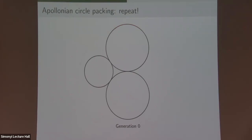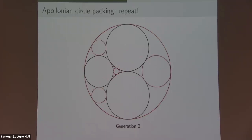This is what makes what we call an Apollonian circle packing. We start with three tangent circles, draw the two given by Apollonius, but now there are a whole lot more holes we can fill — over here, down here. Then there are six more circles you can draw, and every time it triples. Eventually you get a picture that looks something like this — an Apollonian circle packing.